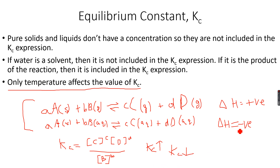If the forward reaction is exothermic and I increase temperature, then the back reaction is endothermic, and an increase in temperature always favours the endothermic side. So the back reaction will be favoured, more of A and B will form, the denominator in the Kc expression will have a larger value, and Kc will decrease.